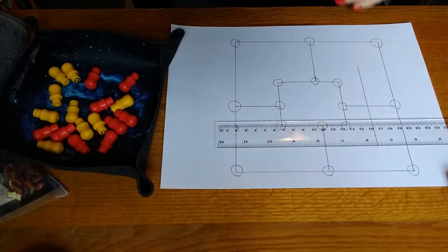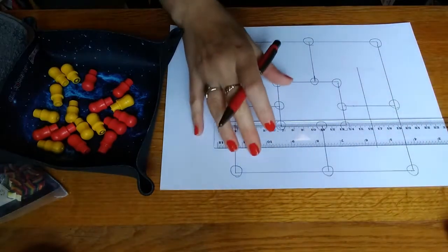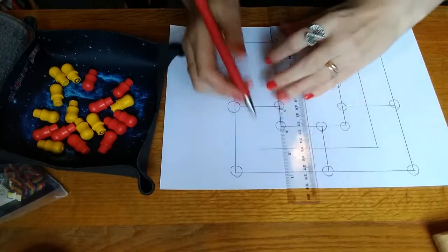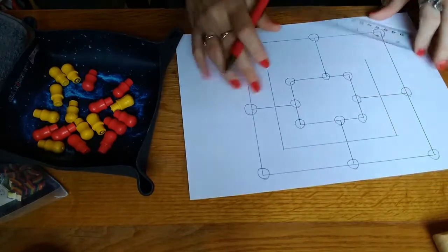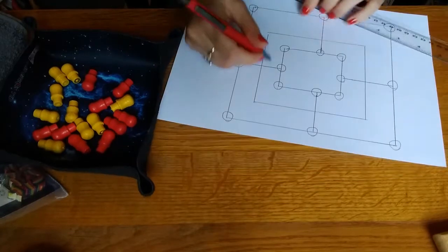And the other nice thing about Nine Men's Morris is it's such a basic board that you can very, very easily just draw a board out. So you don't even need the original, you know, you don't need to buy a copy of it if you want to have a go at it and see if you like it.